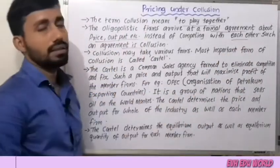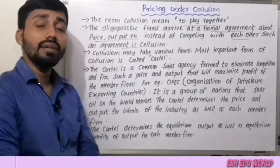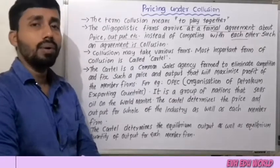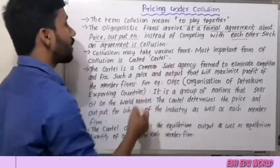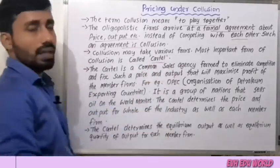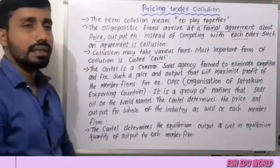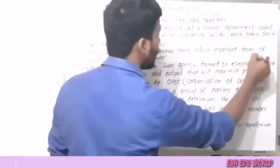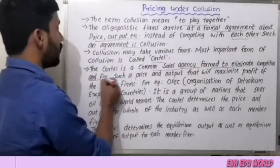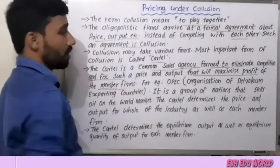What do we call collusion? It is a common sales agency formed to eliminate competition and fix such a price and output that will maximize the profit of the member firms.